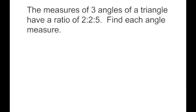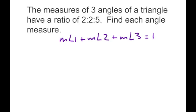Let's go ahead and apply this. The problem says: the measures of 3 angles of a triangle have a ratio of 2 to 2 to 5. Find each angle measure. We know that the measure of angle 1 plus angle 2 plus angle 3 has to equal 180 degrees, because that's our angle sum postulate of a triangle.